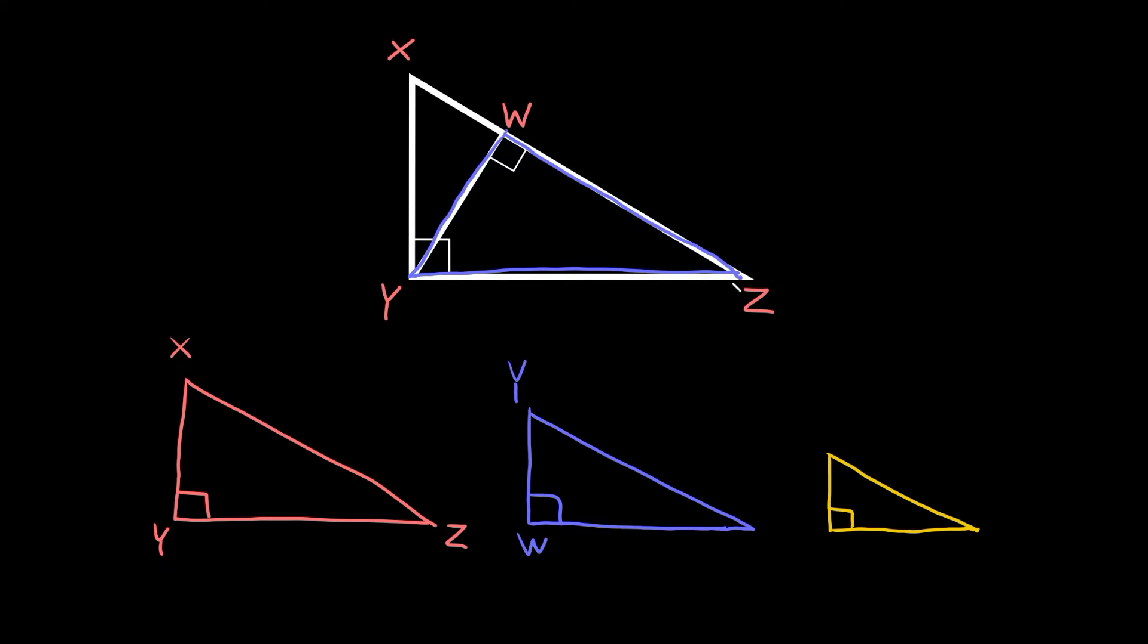And then we have our third angle over here which is just Z. So then this last missing one must be Z. Now lastly let's just clean that up one more time to make it a little cleaner.